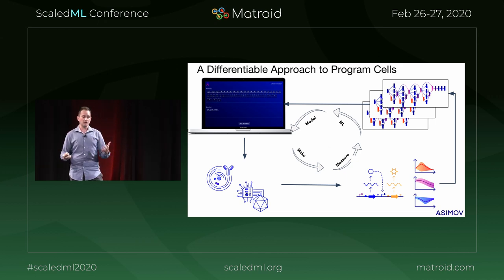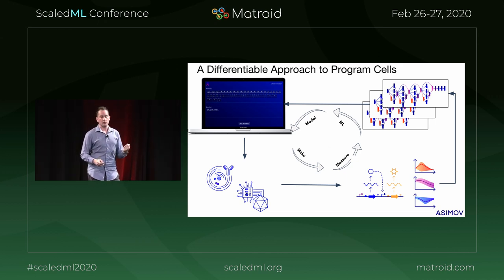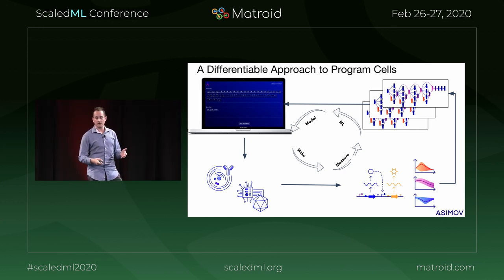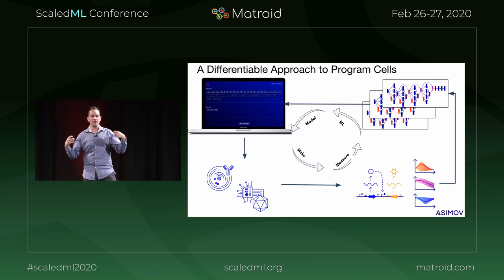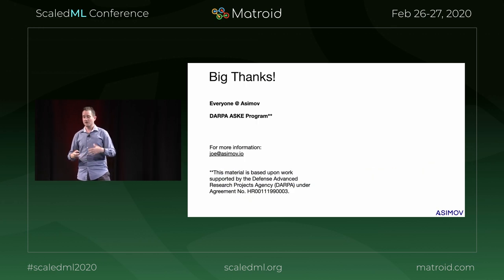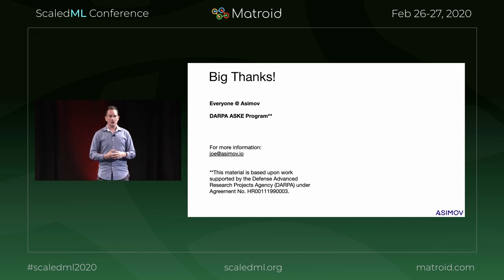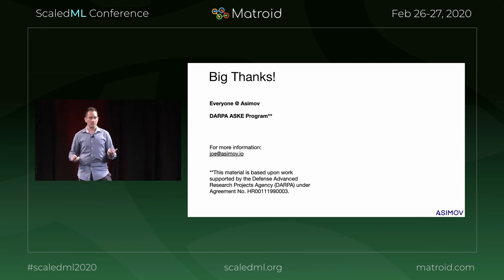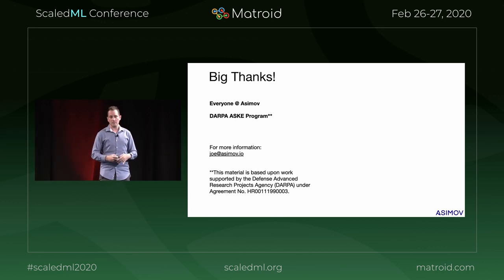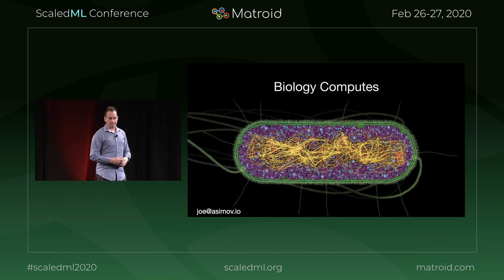Combining all of this, our end goal is to create a differential approach to programming cells where a user expresses some specification and gets back a recommended sequence, can physically construct it, and can capture information about this construct at the DNA, RNA, and protein levels to feed back into our models. A huge shout out to everyone at Asimov — the software engineering team, machine learning team, and biology team — who've been working incredibly hard on these programs, and to the DARPA Automated Scientific Knowledge Exchange program that's helped fund some of this work. Thank you all.